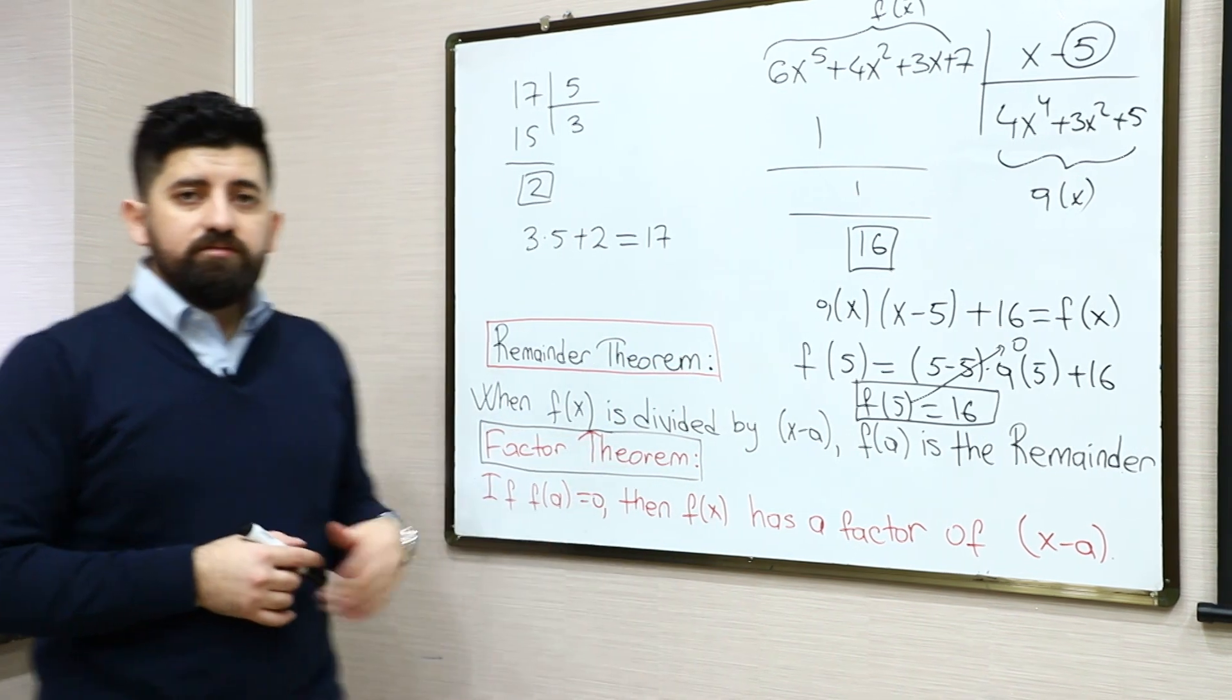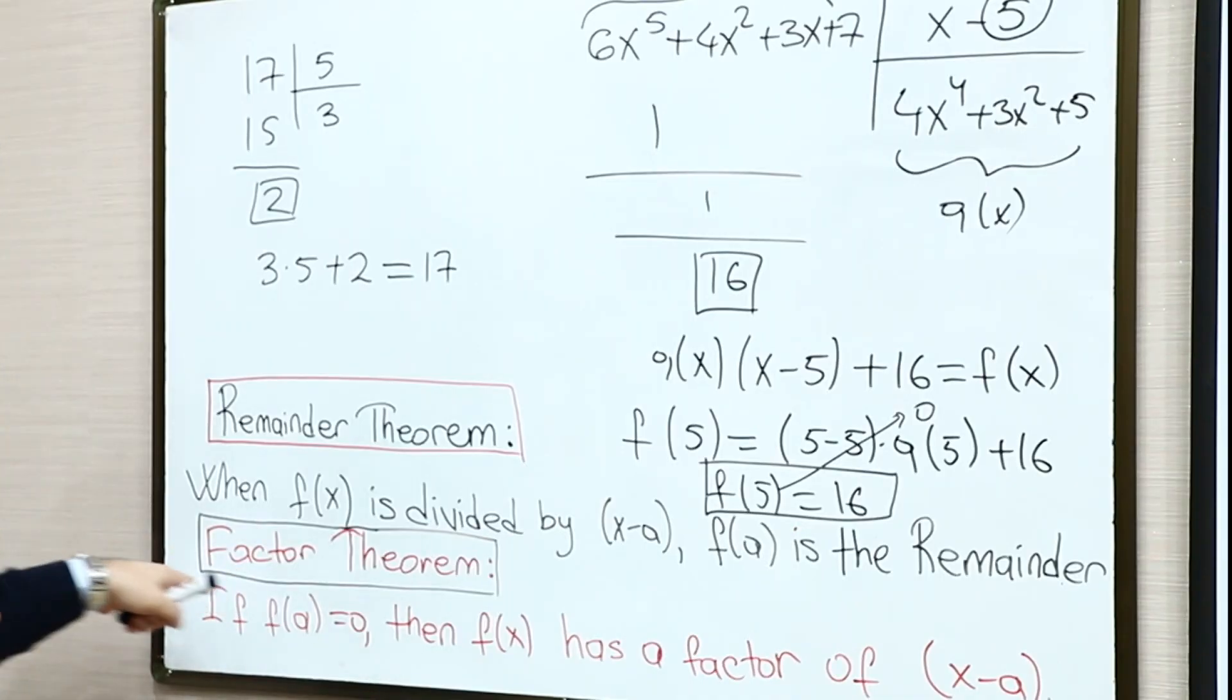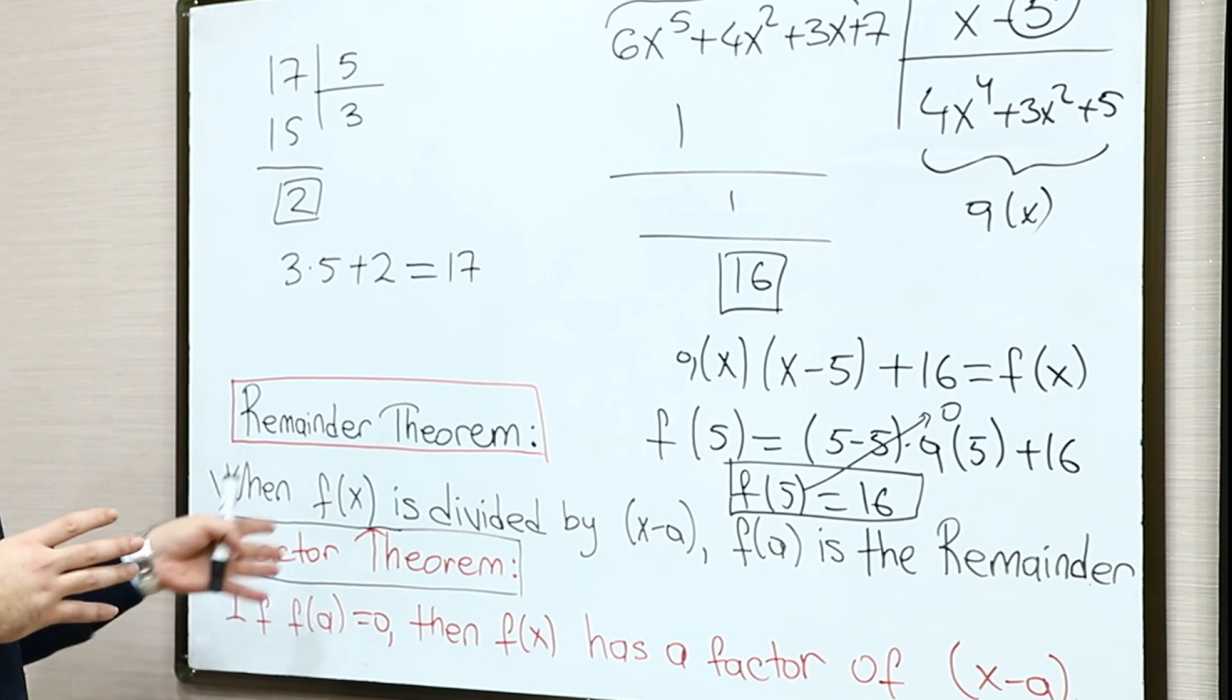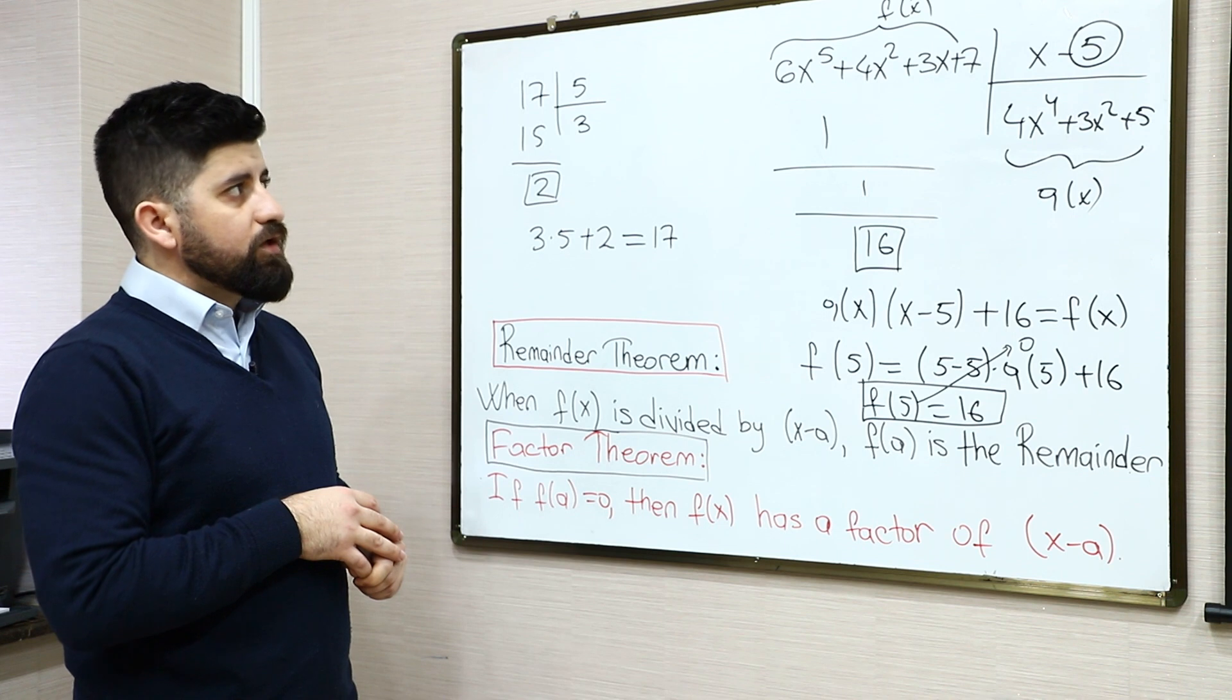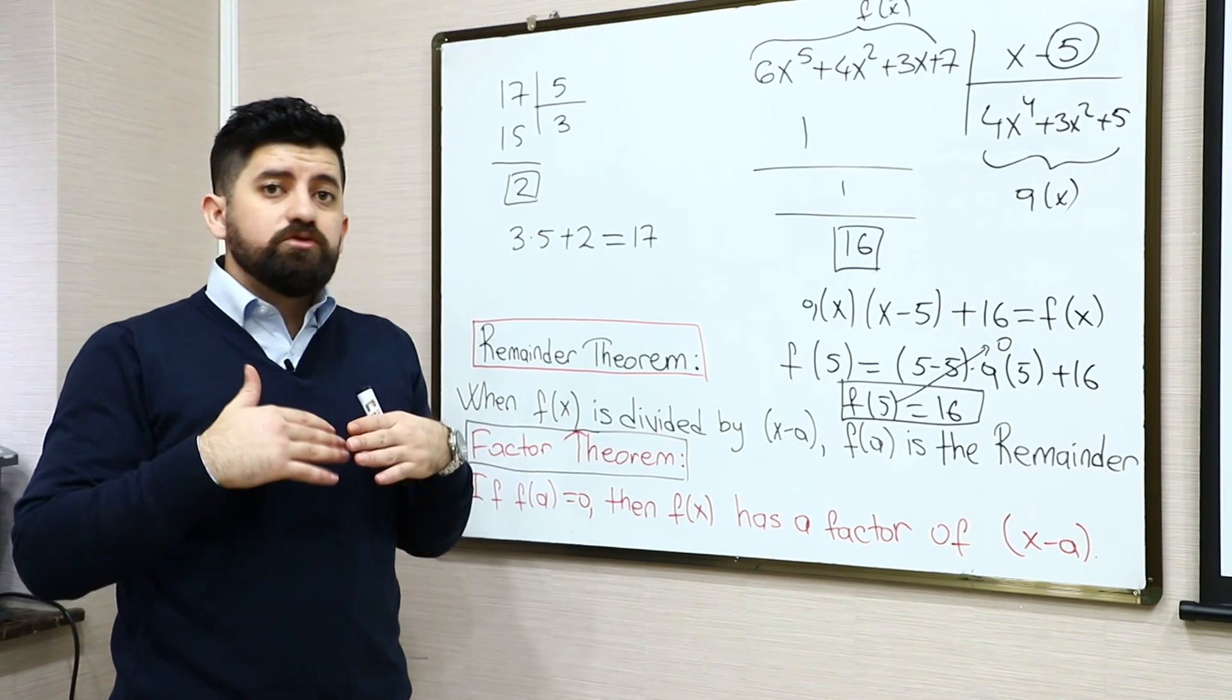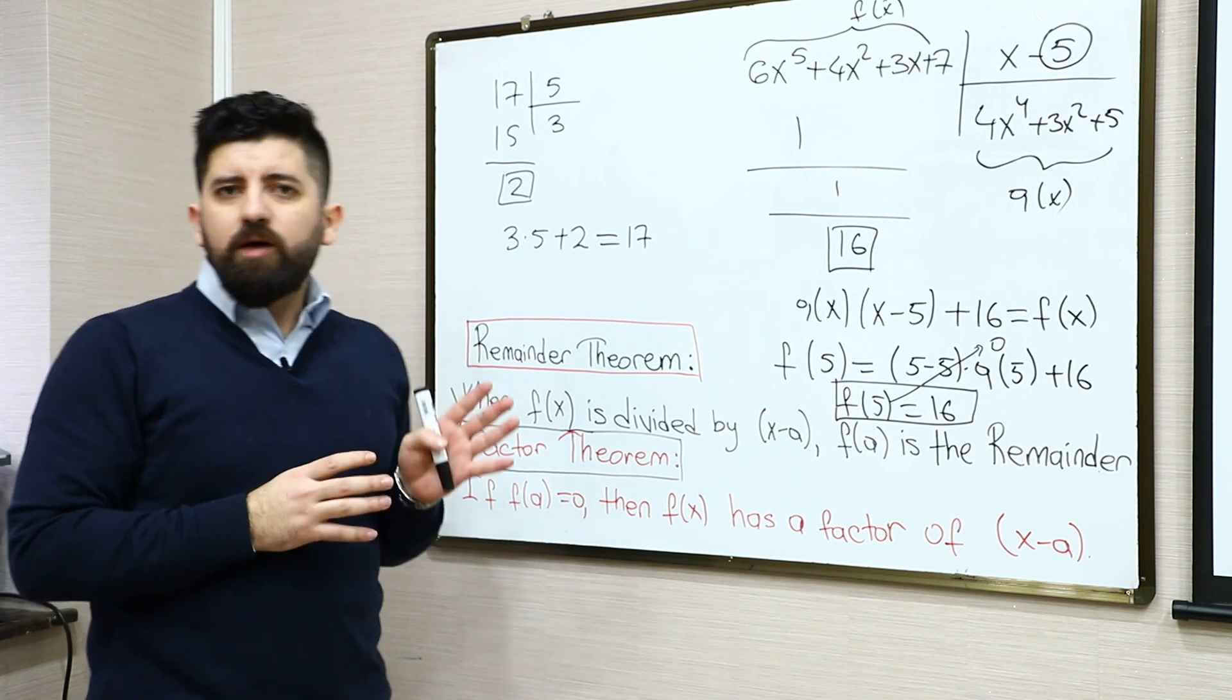And the factor theorem is just a special form of the remainder theorem, which states if f(a) is equal to 0, then x minus a is a factor of this f(x). So I think that's enough just about the remainder and factor theorem. So in order to understand this topic clearly, let's just solve a couple of questions.